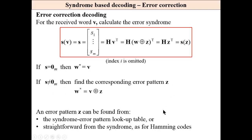It will be explained later on. Two approaches: syndrome error pattern lookup table or straightforward like for Hamming codes.